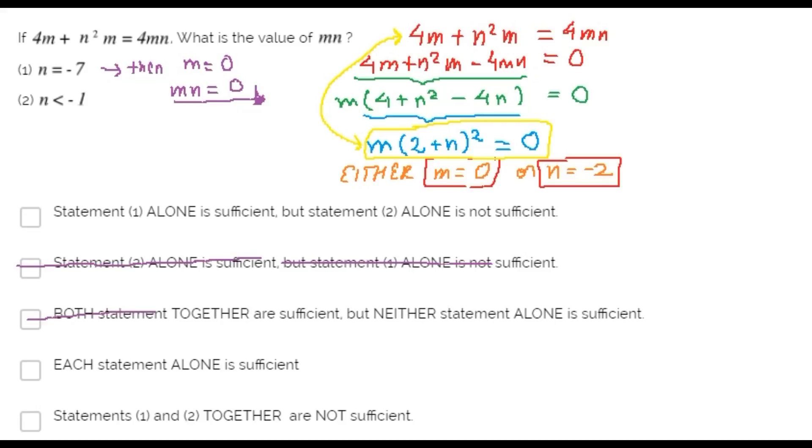Choice B is discarded, choice C is discarded, and choice E is discarded as well. From statement two alone,